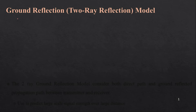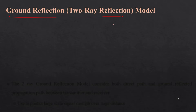Welcome to the wireless communication lecture series. In this video we are going to discuss the ground reflection model, or two-ray reflection model. In the previous lecture we discussed the free space propagation model, which only considered the direct line of sight between transmitter and receiver. In practical scenarios, there are many other propagation mechanisms like reflection, diffraction, and scattering, and here we will consider the ground reflection model.